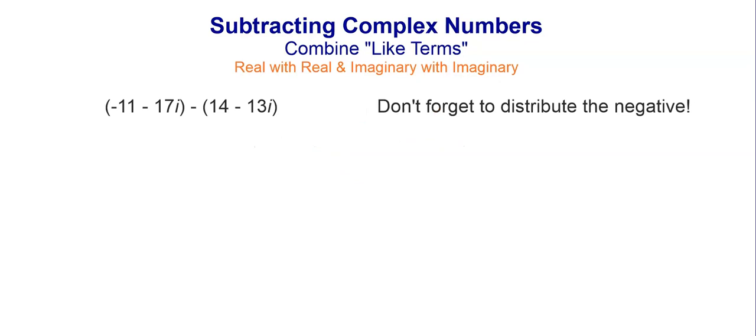Subtracting is the same way, except you're going to want to distribute that negative to everything in the second parentheses. It's like distributing a negative 1. We have two complex numbers, negative 11 minus 17i, and we have 14 minus 13i, and we're subtracting them.